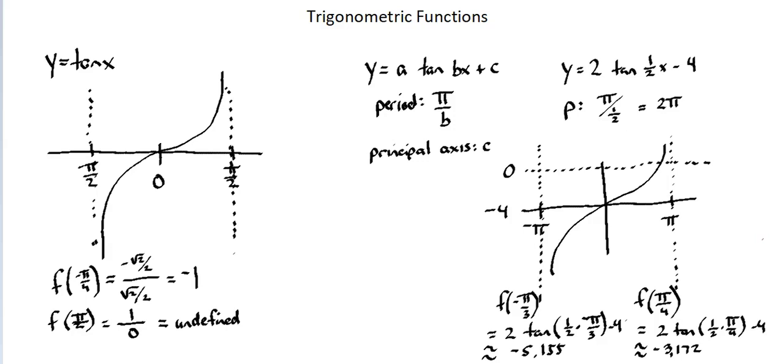I'll mark these inputs and outputs on our graph, starting with negative pi over 3 on the x-axis, and then identifying the point on the curve which has a y-value of negative 5.155. For the x-value of pi over 4, first on the x-axis and then on the curve with a y-value of negative 3.172. These are the inputs and outputs for our evaluated values for y equals 2 tangent 1 half x minus 4.